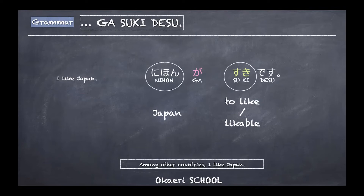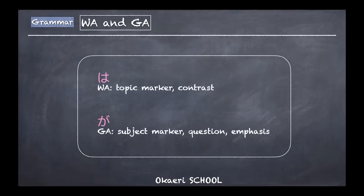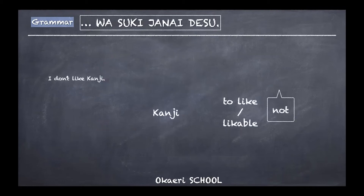Briefly, wa functions as a topic marker, and ga functions as a subject marker or is used in questions and to emphasize. When using wa, the word before it is the topic, or you're making a contrast. The simple rule for today: when we talk about suki, we use ga. That's it.